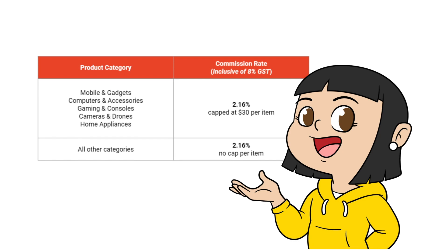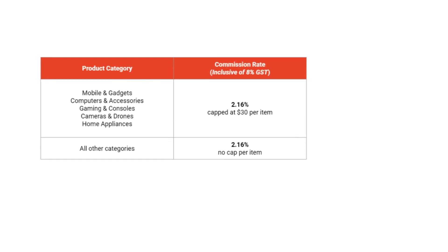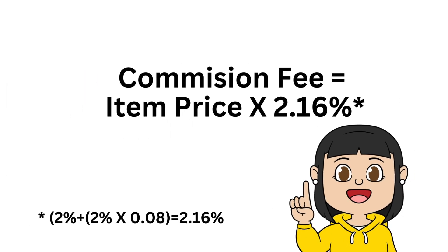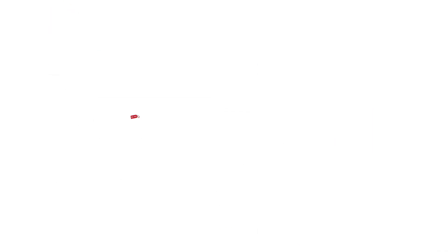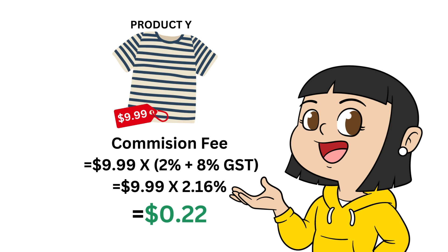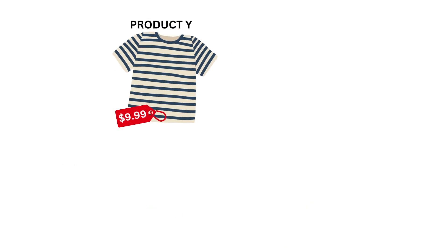How do we calculate the commission fee? Commission fee is item price multiplied by 2%, plus 8% GST. Based on our sample transaction, Product Y is $9.99 with no seller vouchers and no Shopee voucher deductions. We multiply by 2.16%, so our commission fee is $0.22.